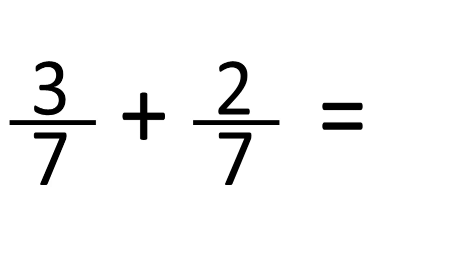If the denominators are the same, then addition is very easy. You just add the numerators. So here we simply say 3 plus 2 is 5, and the answer is 5 sevenths.